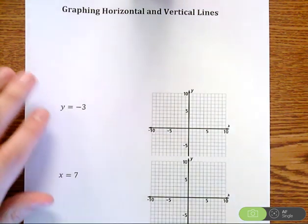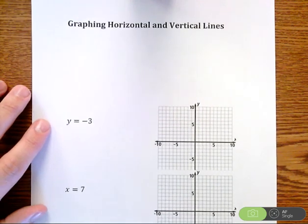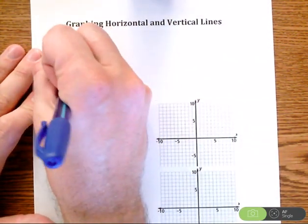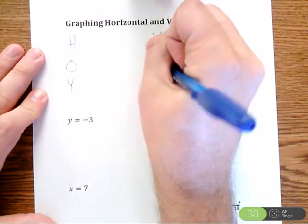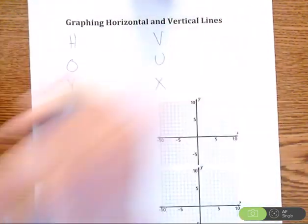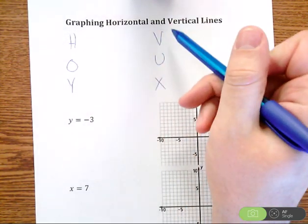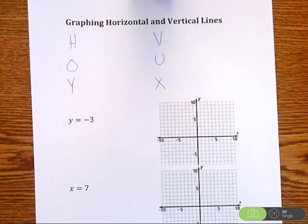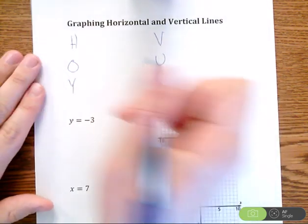So there's a little saying I'm going to show you that kind of helps you figure that all out. The saying, which I mean it might seem crazy at first, but the more you say it you're going to remember it and it helps you through it. And the saying is Hoi vux. Hoi vux. And what this is going to do is it's going to help you graph horizontal and vertical lines as well as remember important characteristics about it.